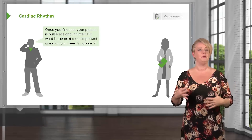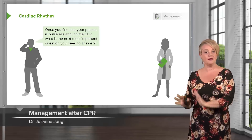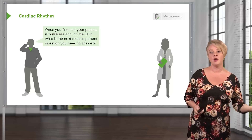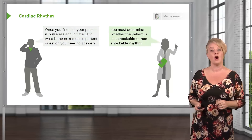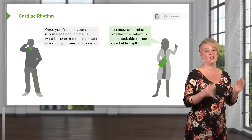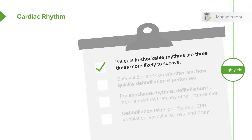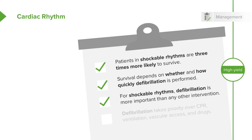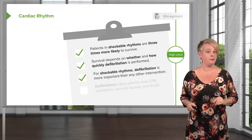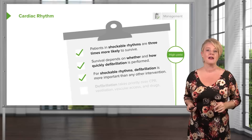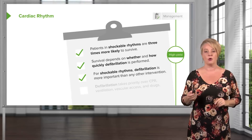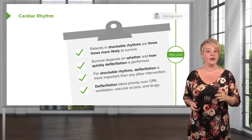Once you have really good quality CPR going, the next question is: what is the cardiac rhythm? Specifically, is it a rhythm we can treat with electricity — a shockable rhythm? Shockable rhythms are associated with higher survival. Patients who can be shocked are more likely to live through a cardiac arrest. But defibrillation is a very time-sensitive intervention — the faster you do it, the more likely your patient will benefit. For shockable rhythms, defibrillation is more important than CPR, more important than ventilation, more important than drugs or IV access. If you have a shockable rhythm, you need to know early and treat it early.